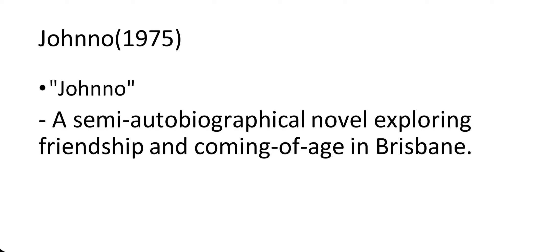The first important work is Johnno. Johnno is a book written by David Malouf in 1975. It's a story that's partly based on the author's own life. The novel follows the protagonist Johnno as he navigates through life in Brisbane, Australia.